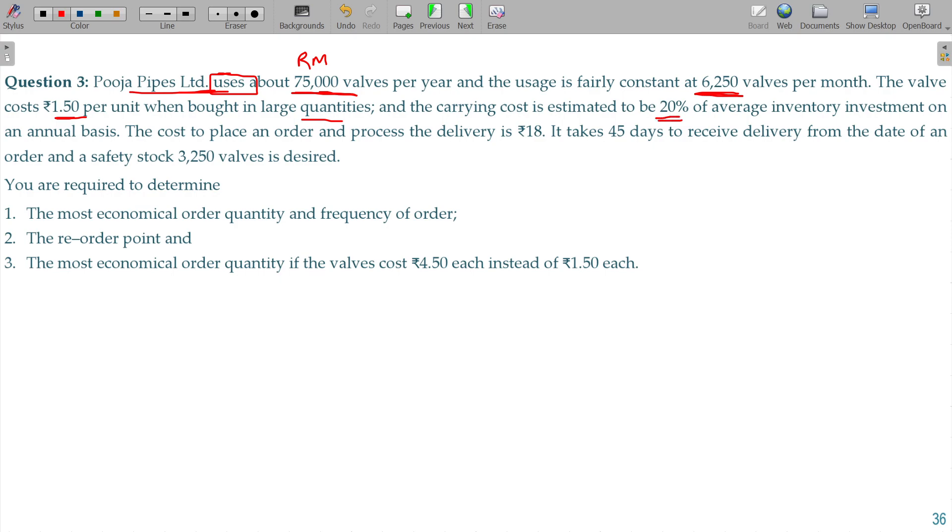The carrying cost is to be 20% on the average inventory investment on annual basis. The carrying cost per unit per annum can be calculated as price multiplied by the carrying cost percentage. 1 rupee 50 paise is the price per unit, carrying cost percentage being 20%, so 30 paise will be the carrying cost per unit per annum.